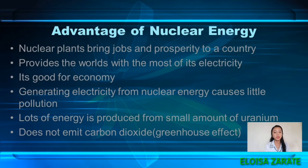Next, nuclear power provides the world with most of its electricity. Based on the Office of Nuclear Energy, nuclear energy has by far the highest capacity factor of any energy source — nuclear power plants are producing maximum power more than 93% of the time during the year. That's about 1.5 to 2 times more than natural gas or coal units, and 2.5 to 3.5 times more reliable than wind and solar plants.